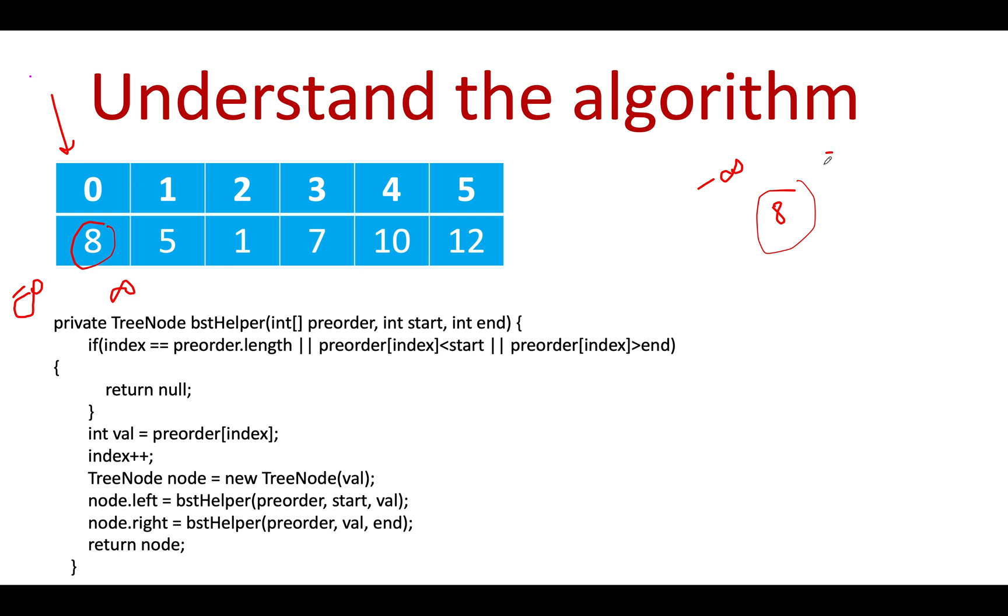The next node we see is at index 1, which is value 5. We will recursively invoke two helper methods and update the lower and upper bounds respectively. The upper bound for the left invocation would be 8, its range will lie within minus infinity and 8. For the right subtree the range would be 8 up till infinity.